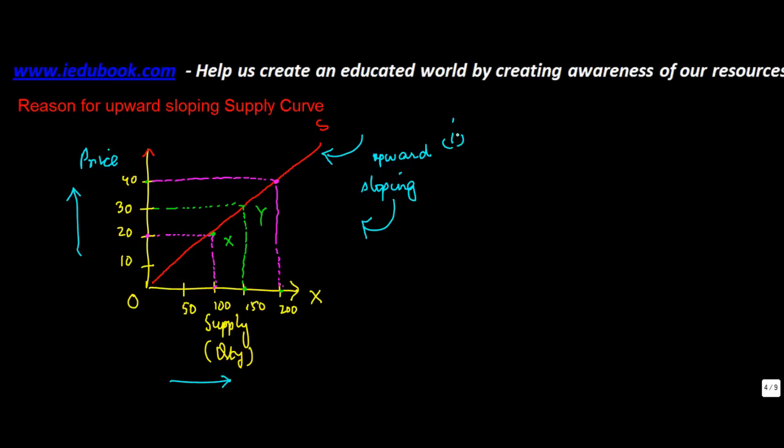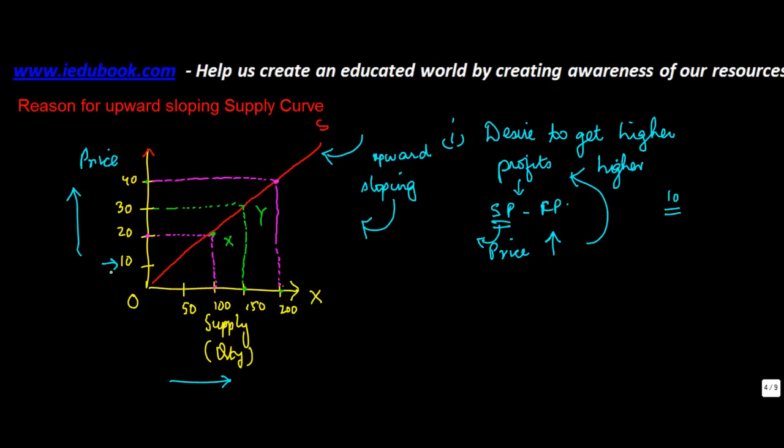This is the price column. Now why does this happen? There are mainly two reasons. One is the desire to get higher profits. Now profit basically is a factor of selling price minus cost price. So selling price is nothing but the price of the commodity. When the price is more, the profits are higher. So if the cost is 10, at 10 rupees there is no profit, at 20 it is 10, at 30 it is 20 - why? 30 minus 10, because this is a fixed price.